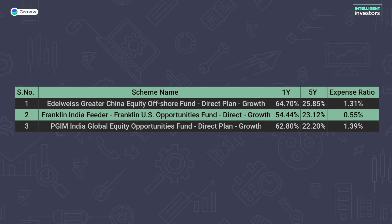Now let's look at the best performing fund of funds based on five-year returns. The first is Edelweiss Greater China Equity Offshore Fund — Direct Plan Growth — with a five-year return of around 25% and an expense ratio of 1.31%. The second is Franklin India Feeder Fund US Opportunities Fund — Direct Growth — with a five-year return of 23% and a much lower expense ratio of 0.55% because it is a feeder fund. The third is PGIM India Global Equity Opportunities Fund — Direct Plan Growth — with a five-year return of 22% and an expense ratio of 1.39%.